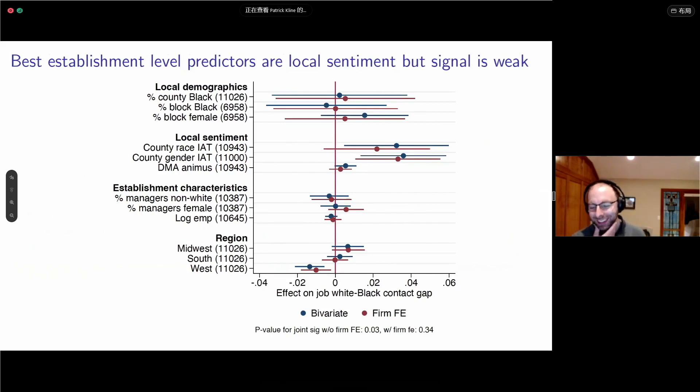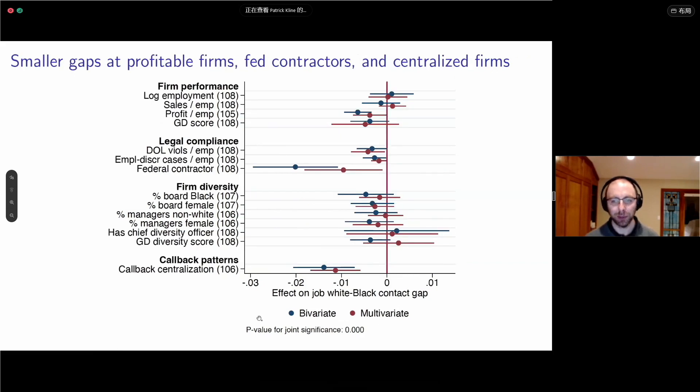We'd like to know how this relates to observables. We're regressing the job-specific contact gaps on observable characteristics of the job and the local area. We don't find much here. The closest we find to a predictor at the job level is local sentiment. The key variables are the county race IAT and gender IAT. IAT is an implicit association test, very popular in the psychology literature. Places where there seems to be more bias against African-Americans or against women tend to have larger black-white contact gaps. But if we do a joint test with firm fixed effects, we can't reject a null that jointly these are all zero.